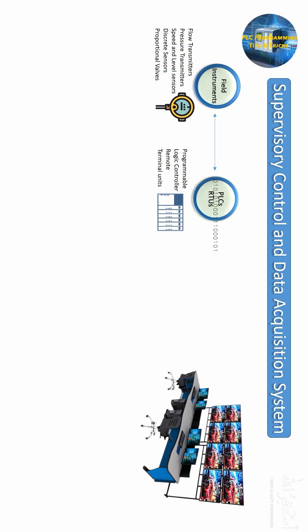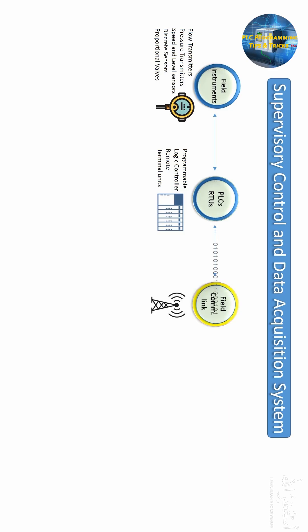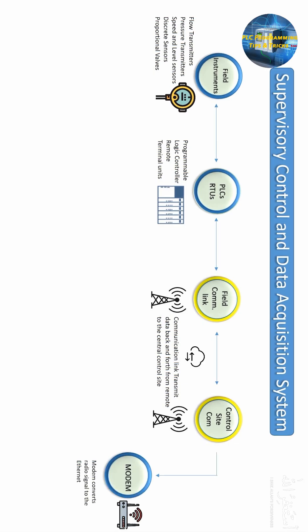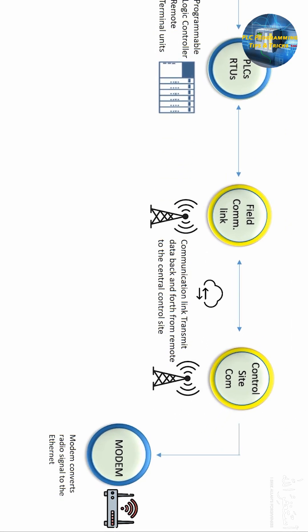These PLCs or RTUs have to send data to some central control station to store this data. For this, the data has to be transmitted over long distances using telemetry. The data is transferred from the field process area to the central control site through communication towers, and the data moves between two towers via radio waves.